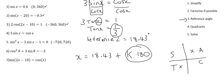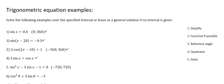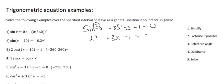Now we're going to go to number five. When you look at number five — sin squared x minus 3 sin x minus 1 — does anything look familiar? We've got something to the power of two, then a normal sin x, then a number. This is actually a trinomial. A trinomial is anything that resembles this format: something squared, then a normal term like x, and then a number.